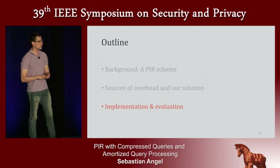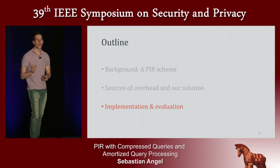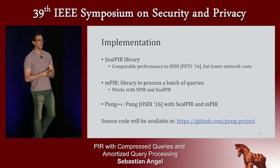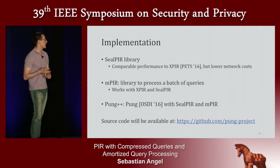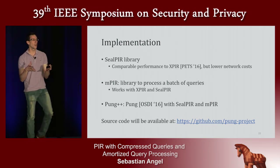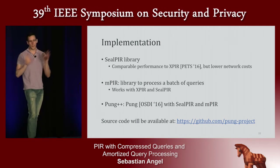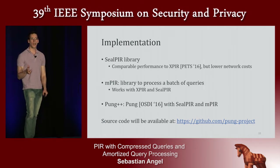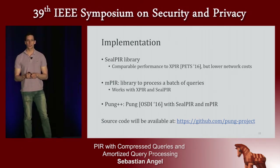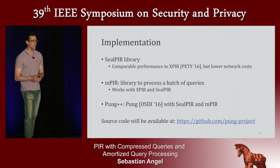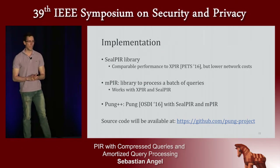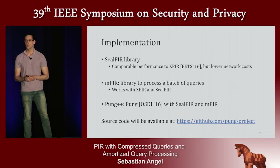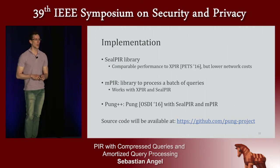Now let me talk about our implementation and evaluation. We implemented two libraries. One is called SILPIR, which is essentially XPIR but with the decompression procedure — it's a different codebase for reasons explained in the paper but it's not fundamental. We also have a library called MPIR, which allows the server to encode the database to process multiple queries more efficiently than processing each individually. We also re-implemented the Pung private communication system using both libraries to see the benefits from our techniques.